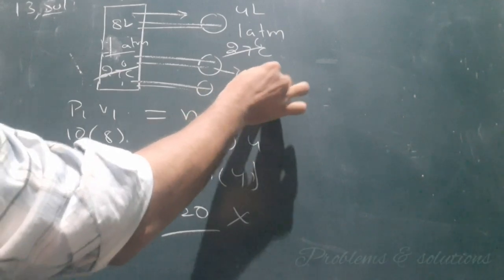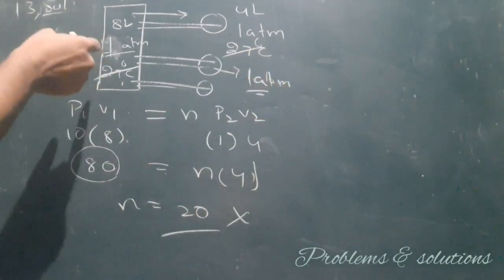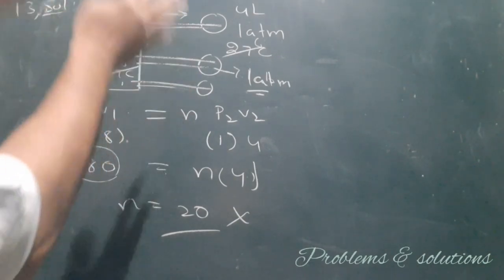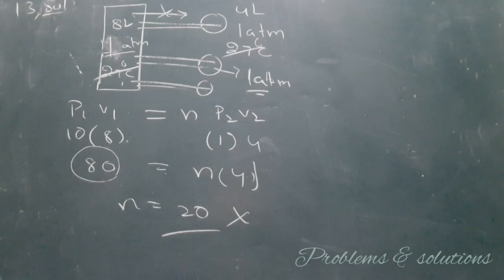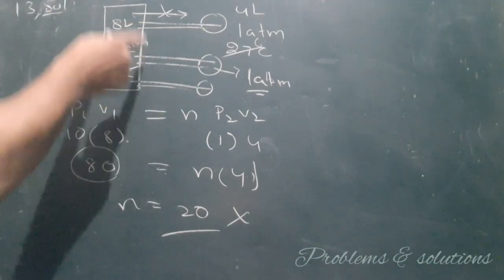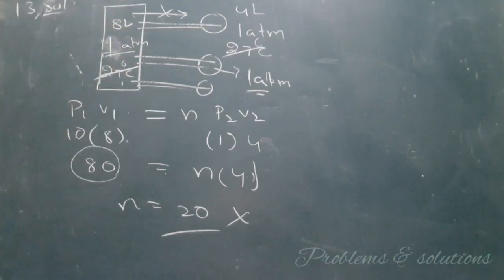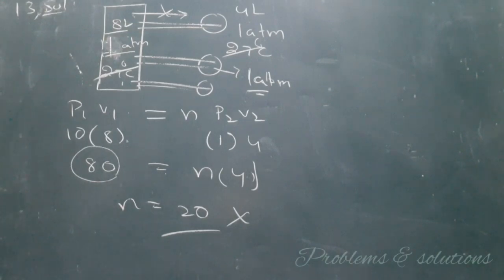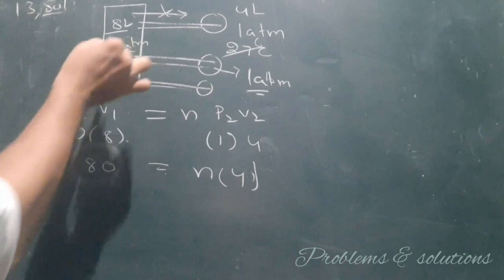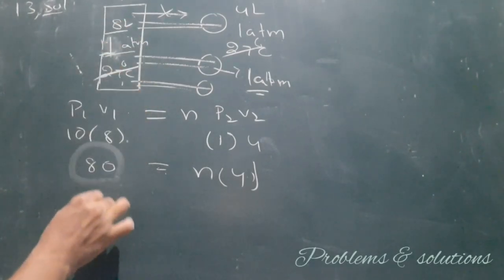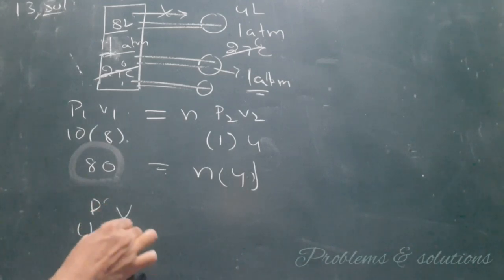Our required atmospheric pressure is 1 atmosphere. So whenever it reaches 1 atmospheric pressure, the transferring of gas stops. The gas won't transfer from cylinder to balloon. So some amount of gas remains in this container. Its volume is 8 liters and the pressure is 1 atmosphere. So the amount of gas that will remain in the container is P times V equals 1 times 8 equals 8.